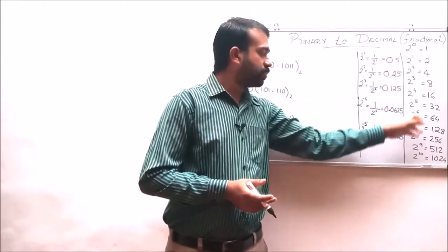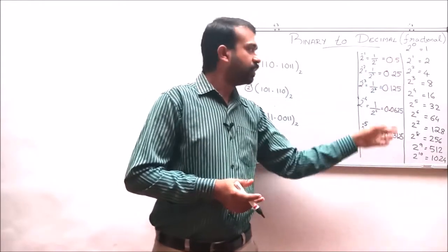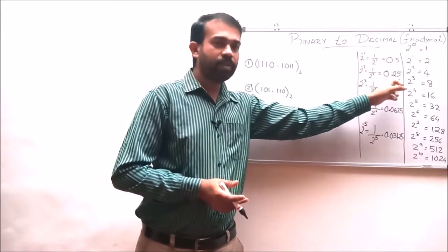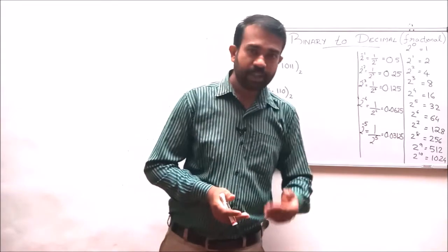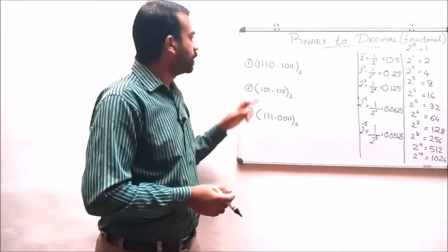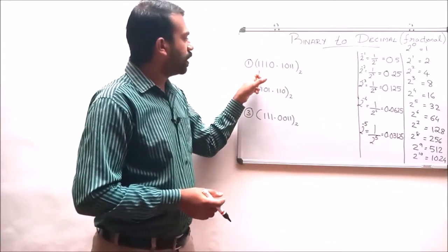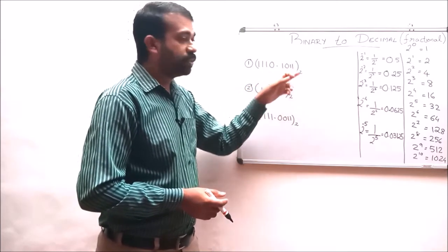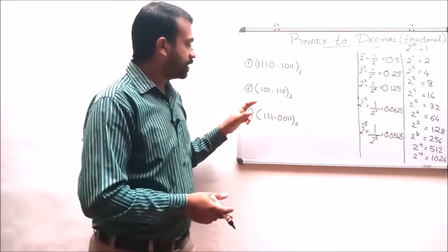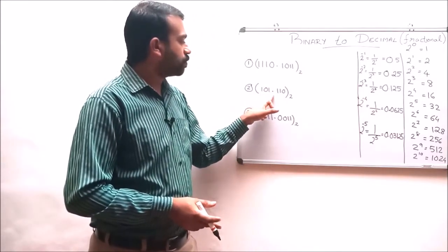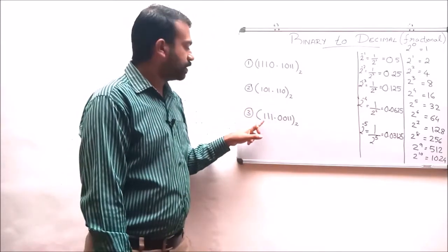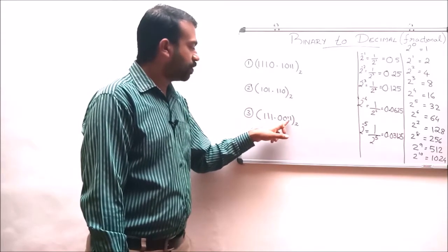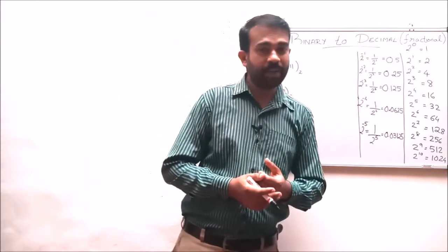The 2's power chart includes: 2 raised to 0, 2 raised to 1, up to 2 raised to 10, and 2 raised to minus 1 equals 0.5, 2 raised to minus 2 equals 0.25, and so on up to 2 raised to minus 5. The assignment questions are: convert 1110.1011 (base 2) to its decimal equivalent; convert 101.110; and convert 111.0011 to its decimal equivalent.